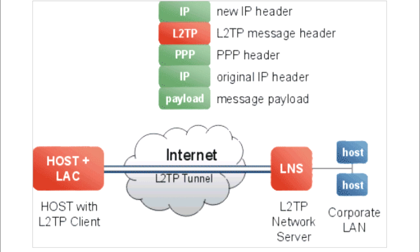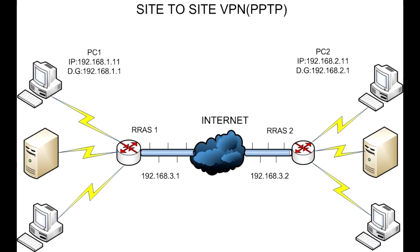Number 2: Layer 2 Tunneling Protocol, L2TP. L2TP is a tunneling protocol that is usually combined with another VPN security protocol like IPsec to create a highly secure VPN connection. L2TP creates a tunnel between two L2TP connection points, and IPsec protocol encrypts the data and handles secure communication between the tunnel.